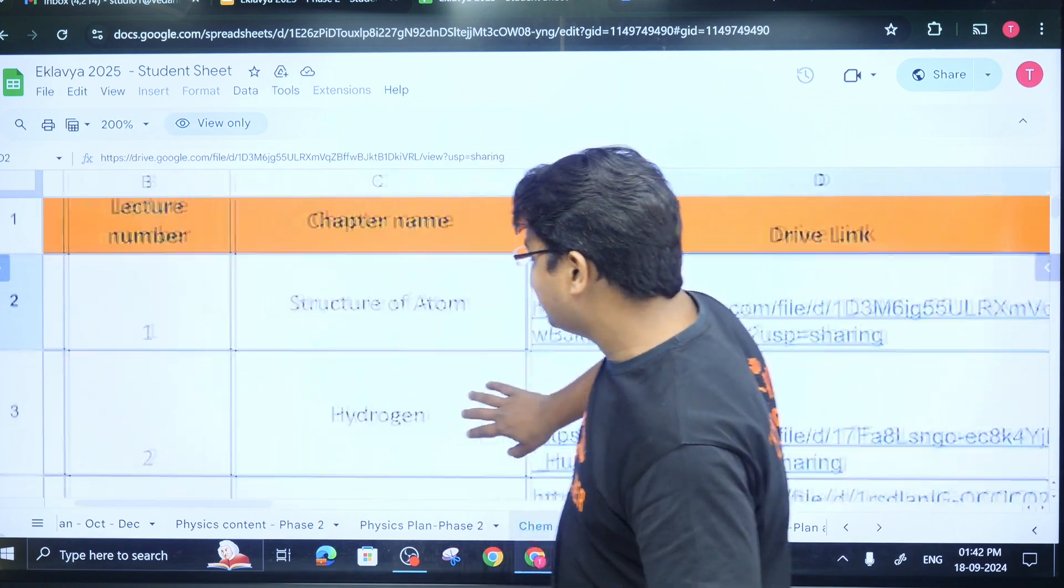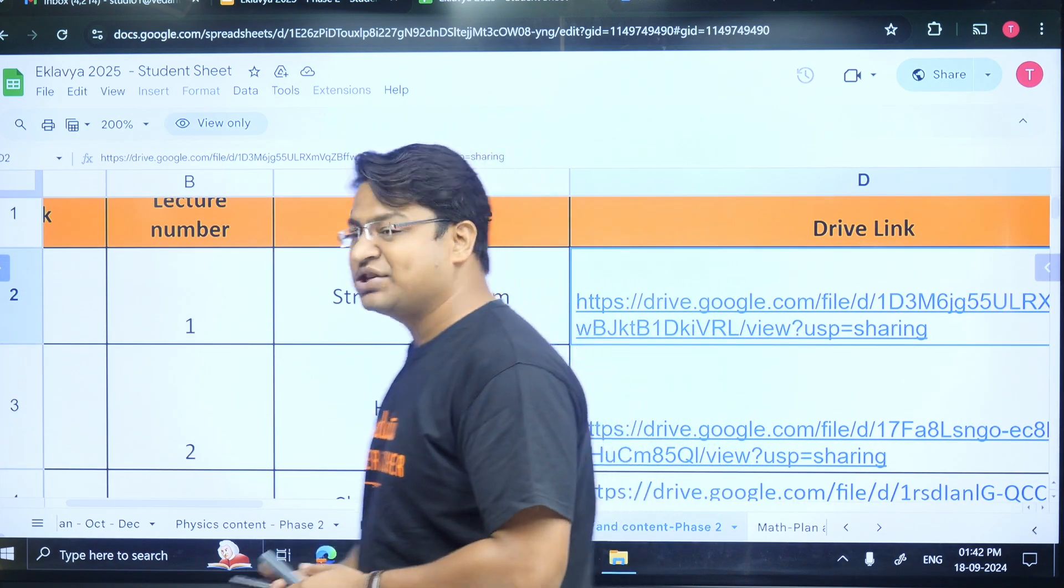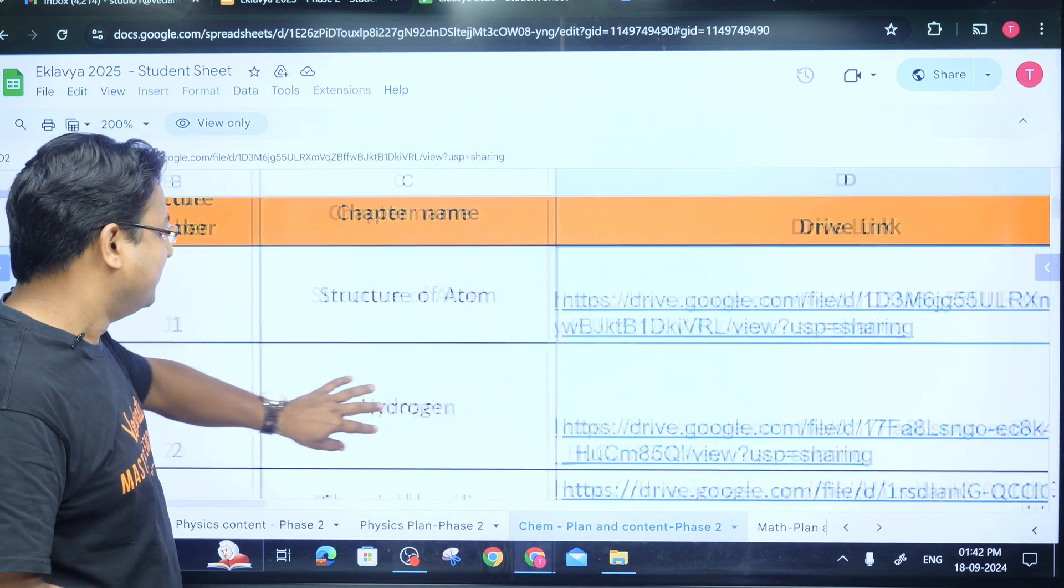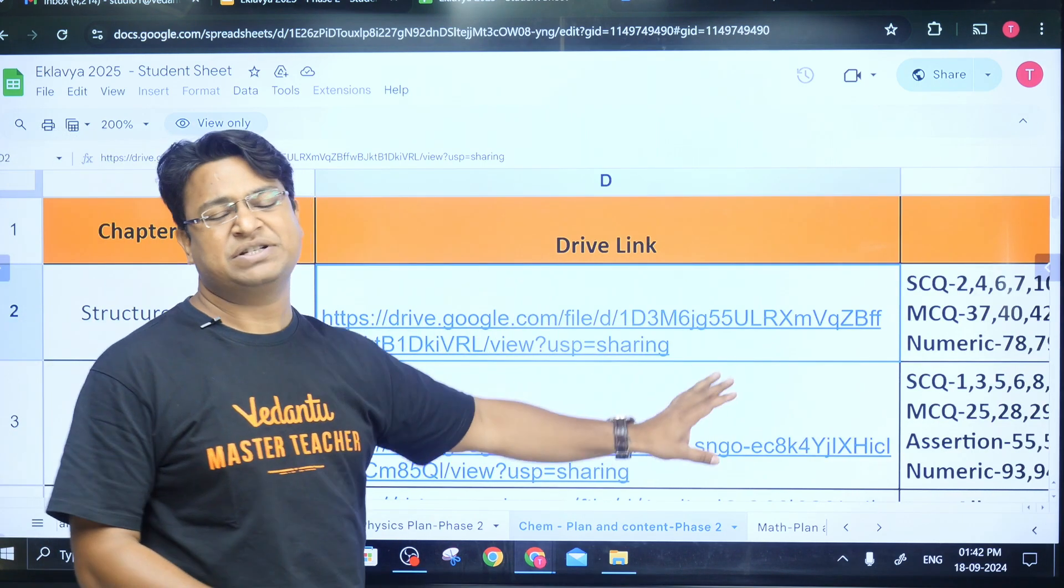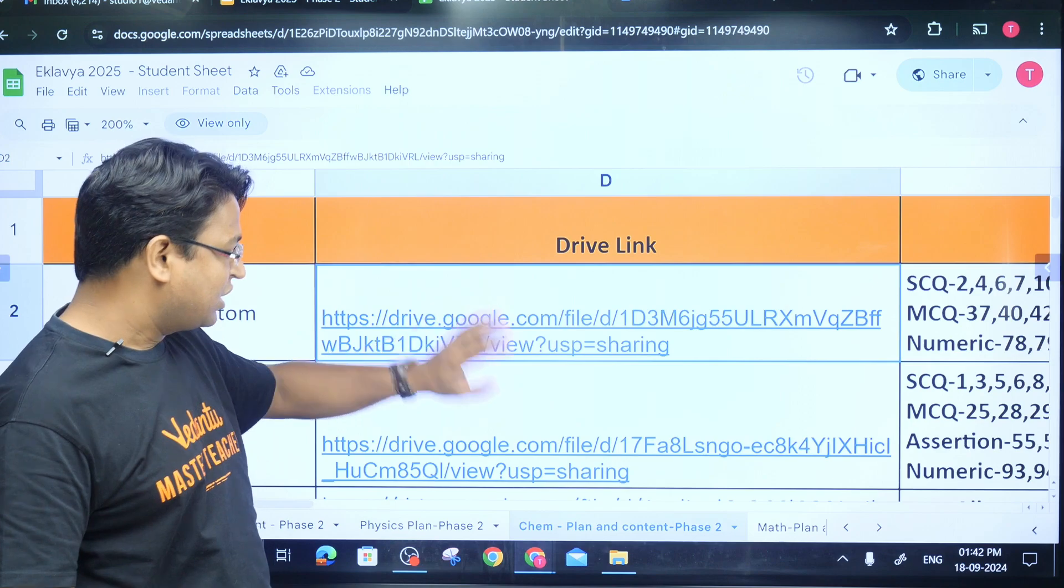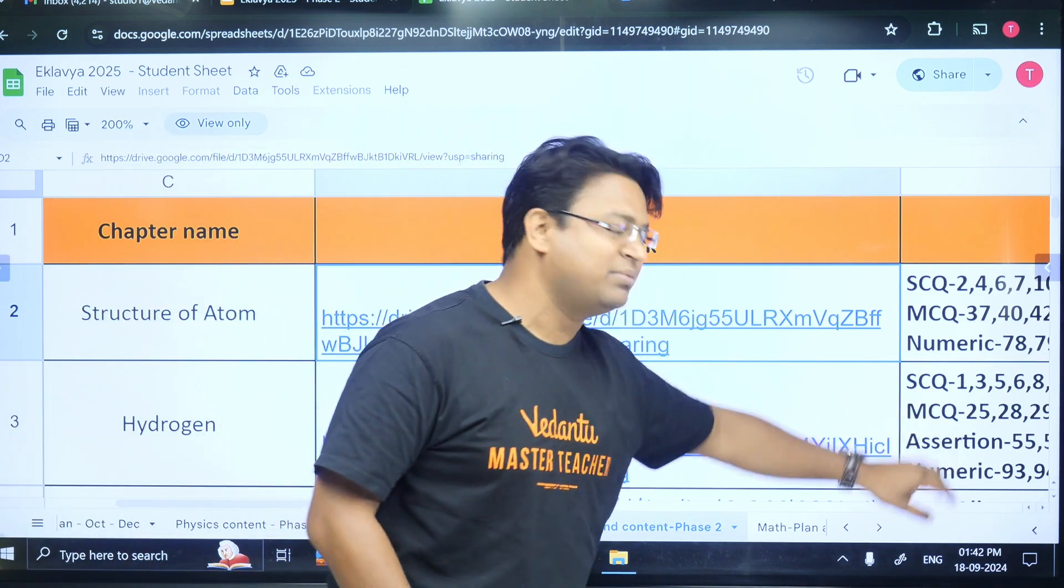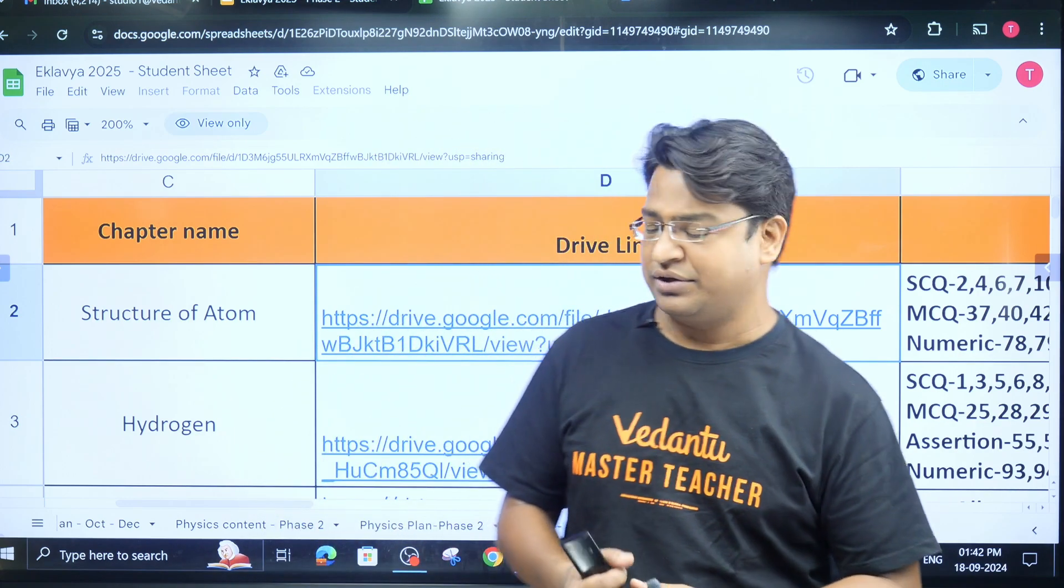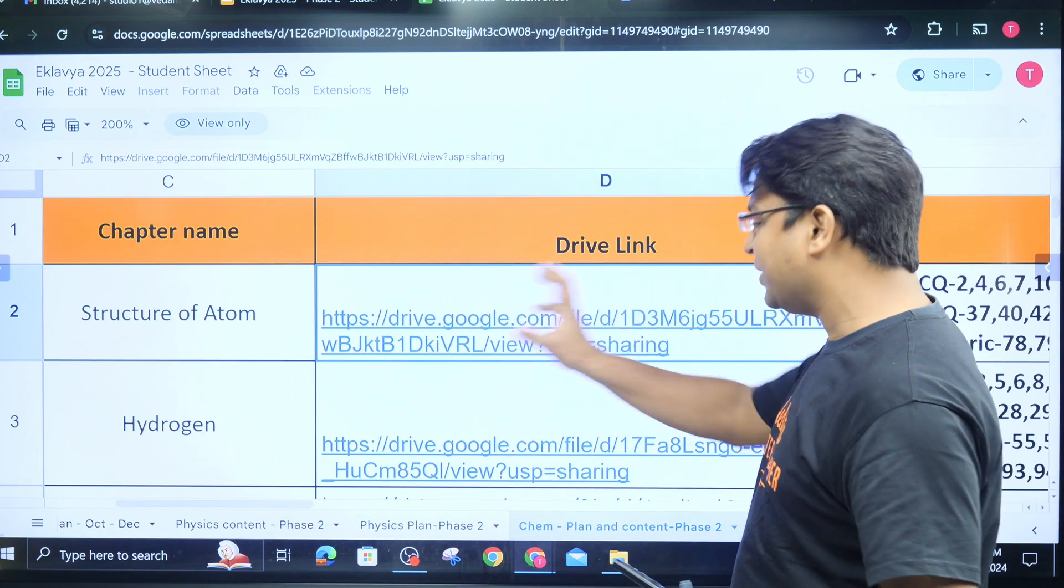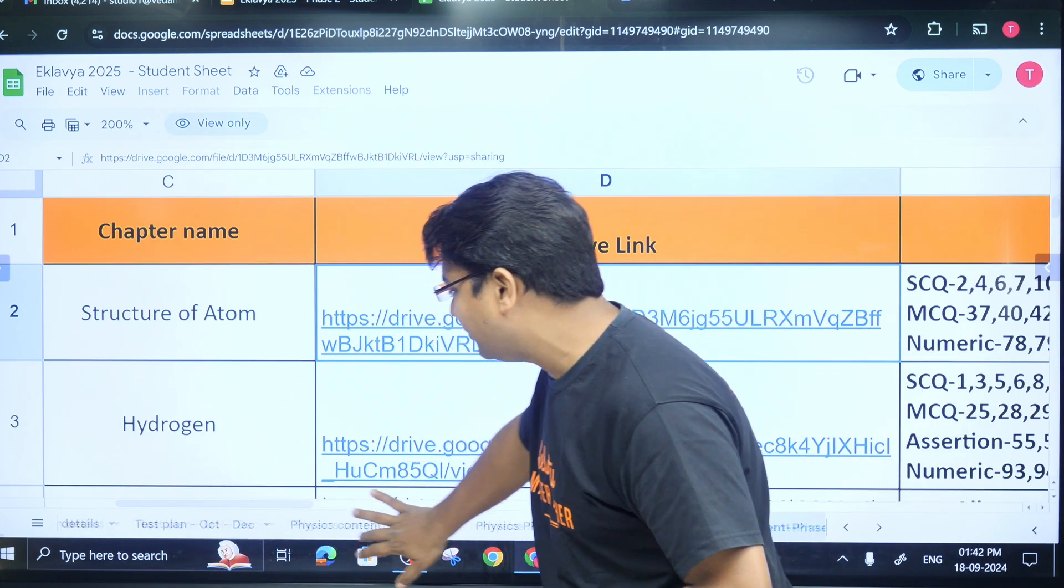Similarly, whenever you have lecture two of chemistry, you would be expected to attempt questions from this file. Everything is present in a properly organized manner. Click on this file, open this file, these are the question numbers that you need to attempt, and then join the class and ask your doubts there.